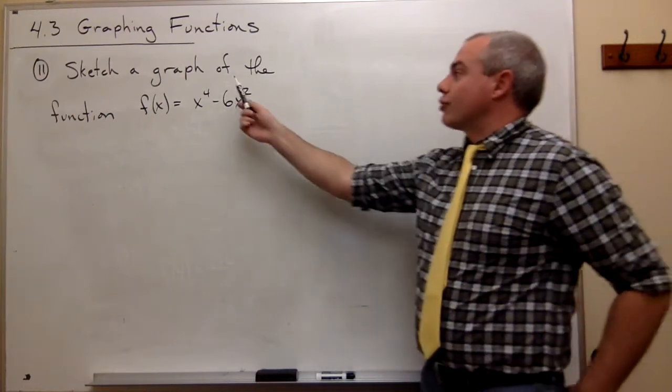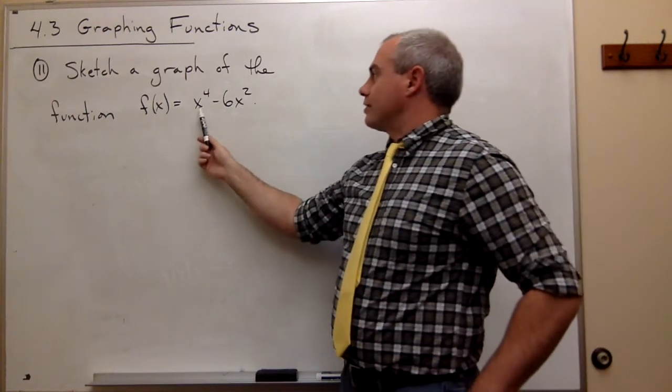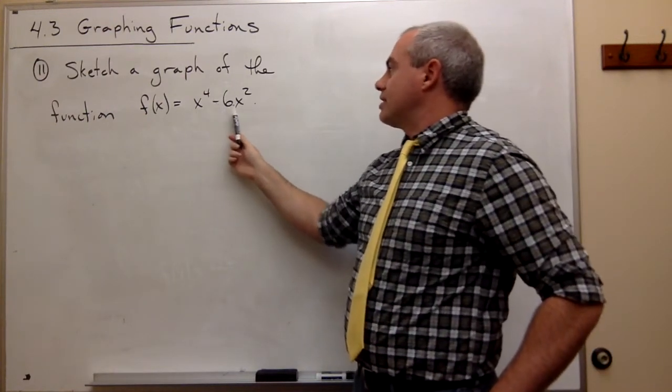In problem number 11, I'd like to sketch a graph of the function f of x equals x to the fourth minus 6x squared.